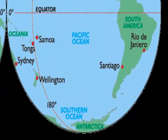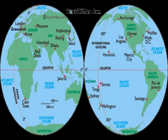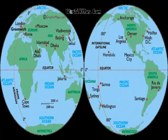The International Date Line runs at 180 degrees. The standard time at the Prime Meridian will always be 12 noon, while the International Date Line will always be 12 midnight. Each experience day and night differently.